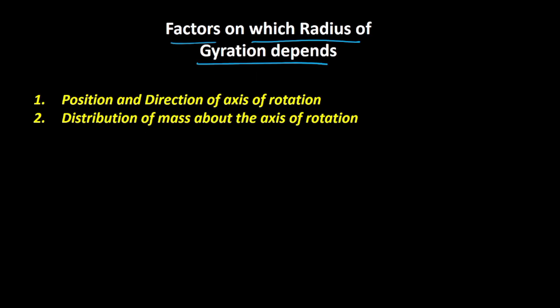Now let's understand the factors on which radius of gyration depends. The first factor is the position and direction of the axis of rotation — if you change the position or direction of the axis, the radius of gyration will change. Also, if the distribution of mass about the axis of rotation changes, the radius of gyration changes as well.